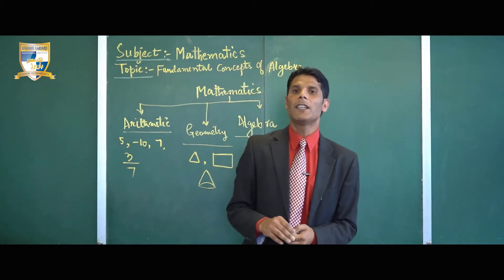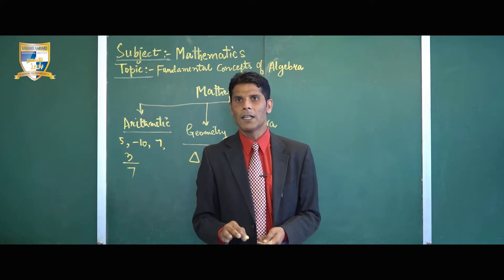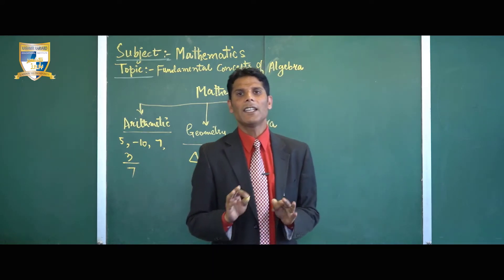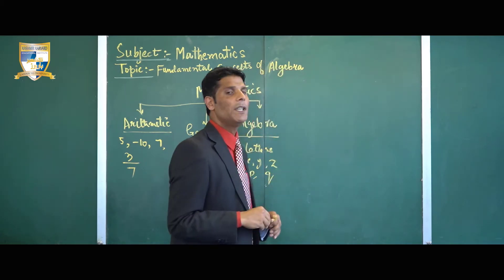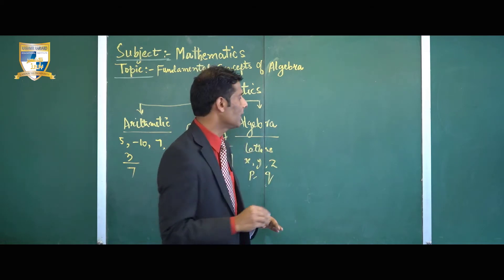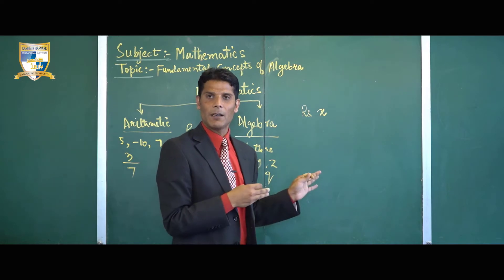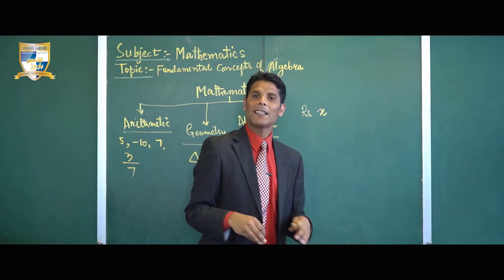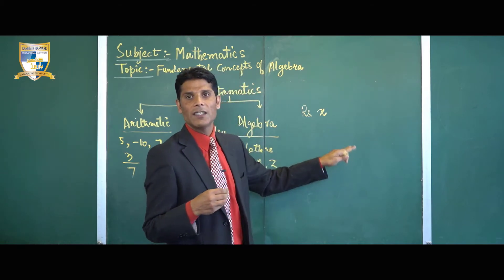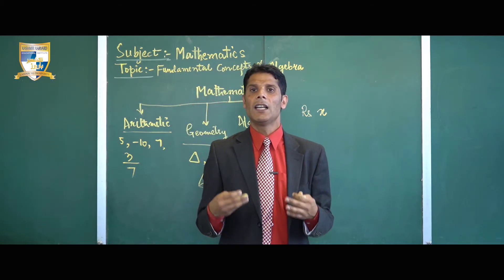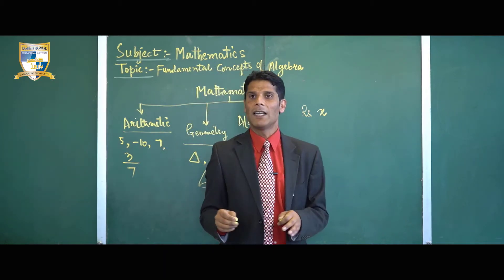The letters which we use in algebra are called variables, because they don't have any fixed value and their value gets changed from question to question. For example, if a person is having rupees x, that amount is unknown. This unknown is called a variable because it changes from one person to another or from one question to another.